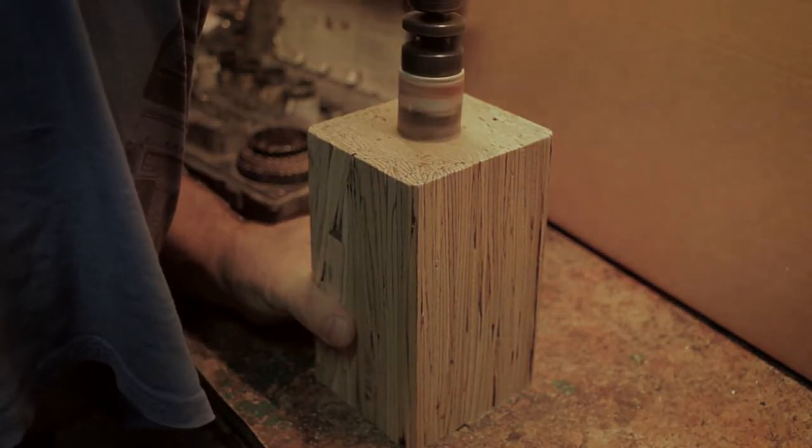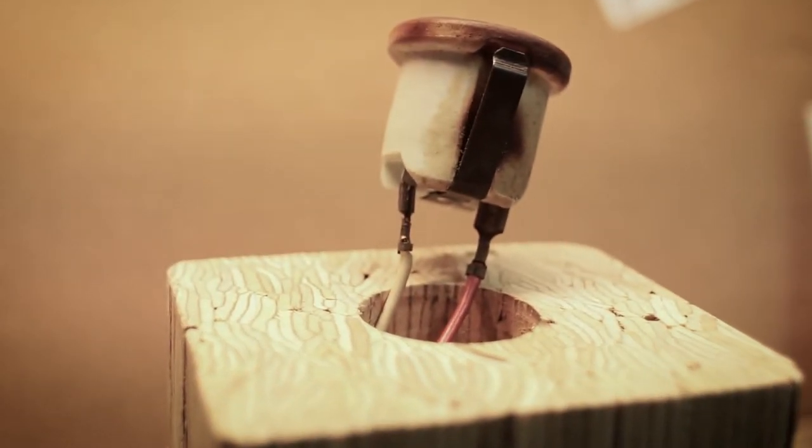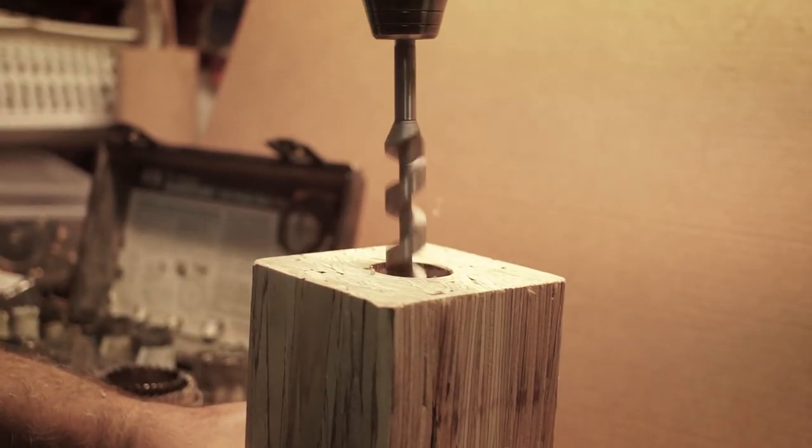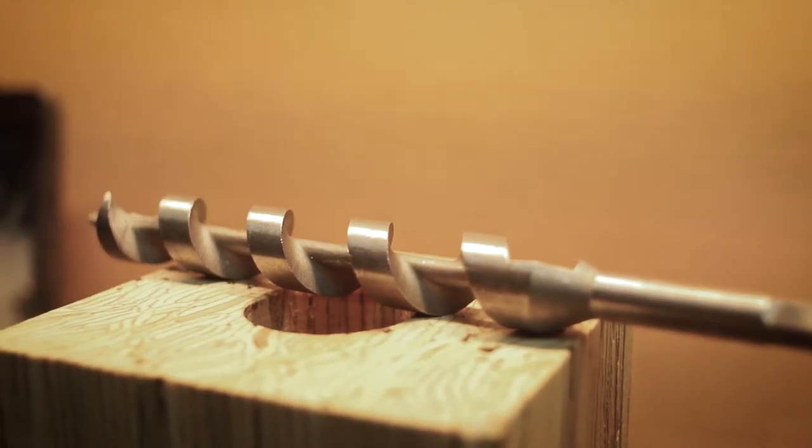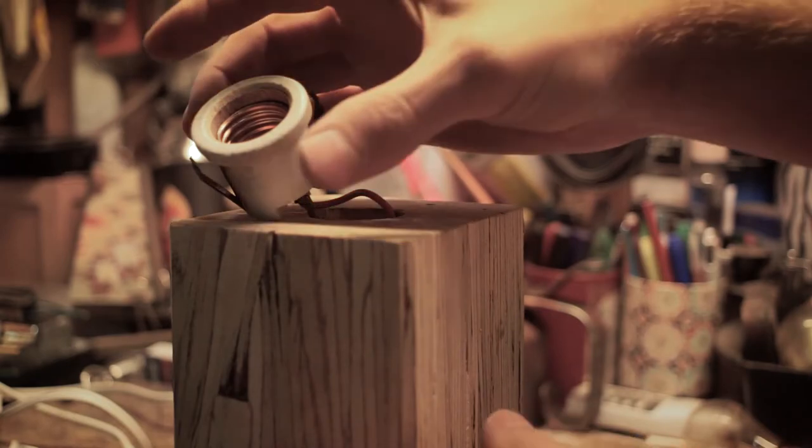As you can see, the end result should be a hole of the same depth and diameter as the light socket. To get the rest of the cable through the wooden block, make sure you drill all the way through and pass the cable from one end to the other. Next step is to push the light socket in place and make sure it stays safely secured.